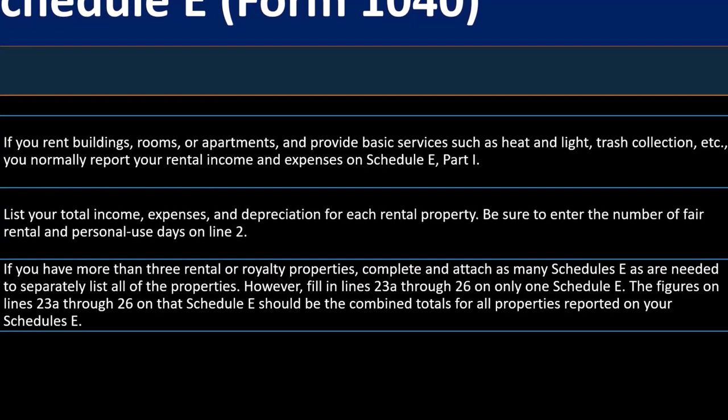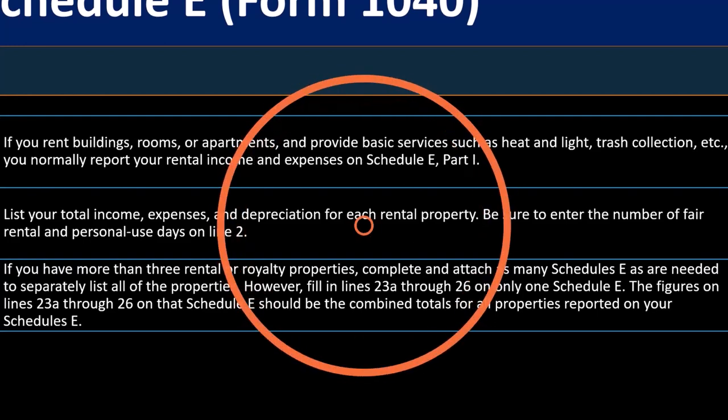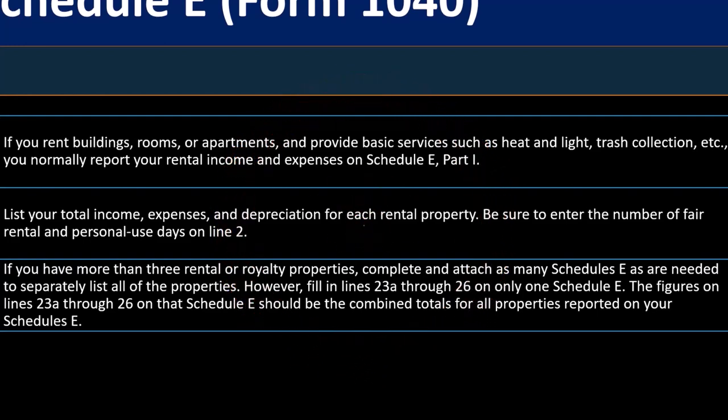In other words, if you had one property with income and another with a loss, you're going to report them separately. But when you net them together, you might end up with net income.